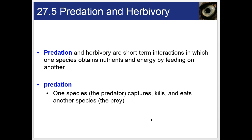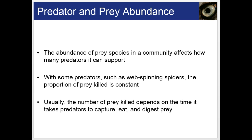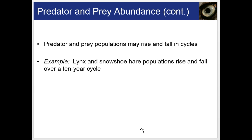Predation and herbivory are short-term interactions in which one species obtains nutrients and energy by feeding on another. In predation, one species — the predator — captures, kills, and eats the other species, called the prey. The abundance of prey species affects how many predators a habitat can support. With some predators like web-spinning spiders, the proportion of prey killed is constant; usually the number killed depends on the time it takes predators to capture, eat, and digest prey. Predator and prey populations may rise and fall in cycles, such as the lynx and snowshoe hare populations cycling over 10 years.